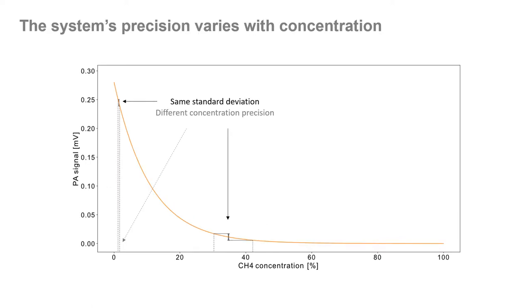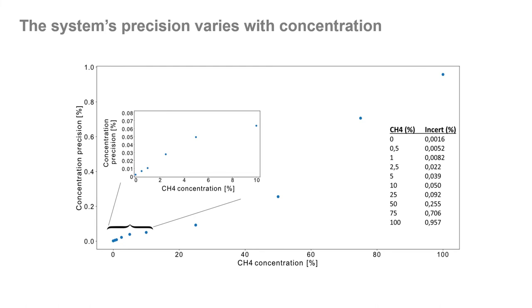Because of the curved shape of the fitting function, it means that the system's precision varies with concentration even for a photoacoustic signal with the same standard deviation. This means that the precision gets better at lower concentration and a bit worse at high concentration. However, this can be beneficial if we happen to be looking for small amounts of gases.